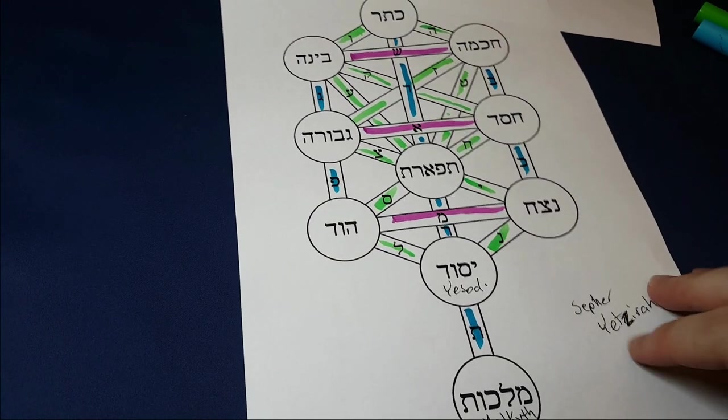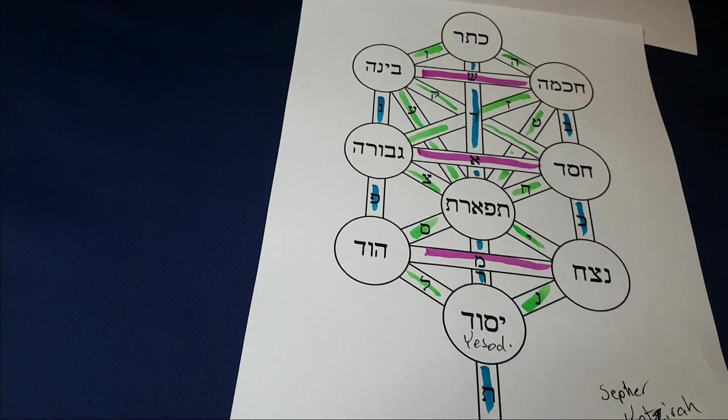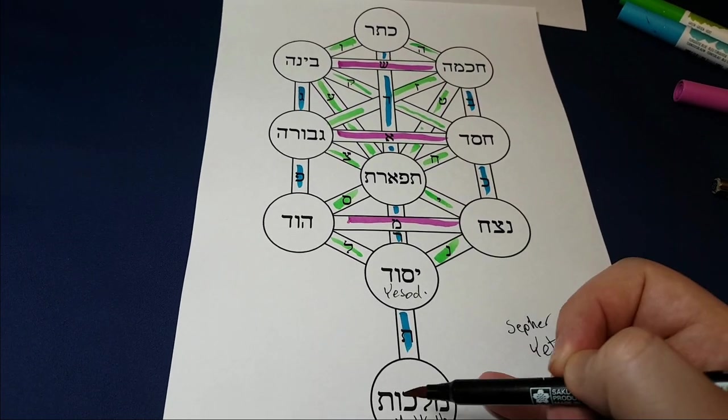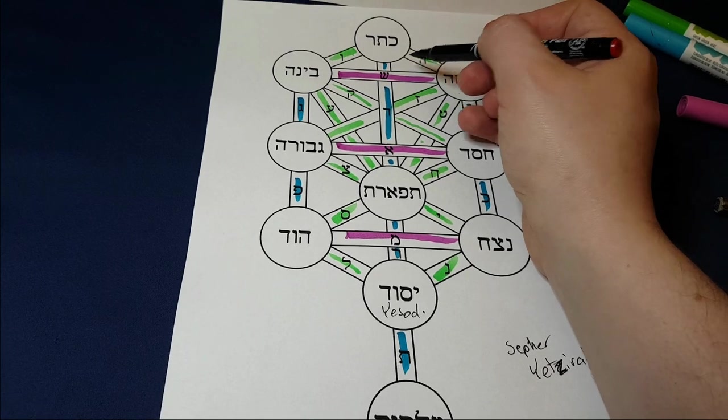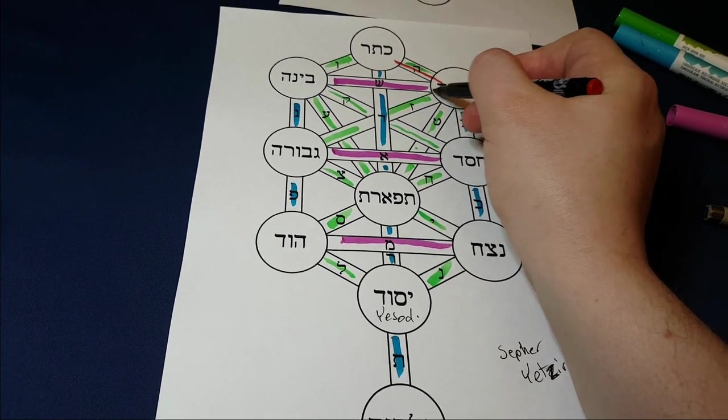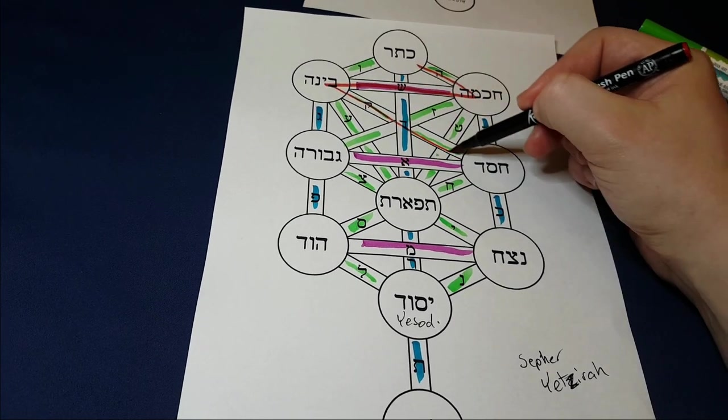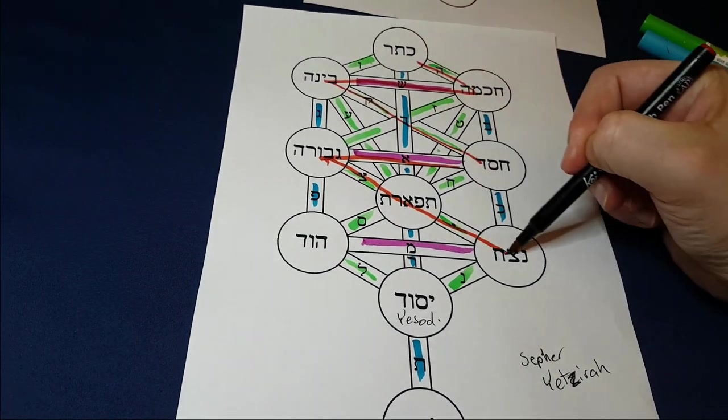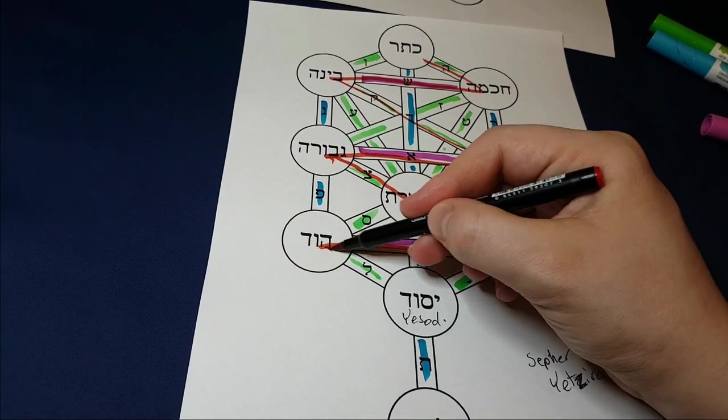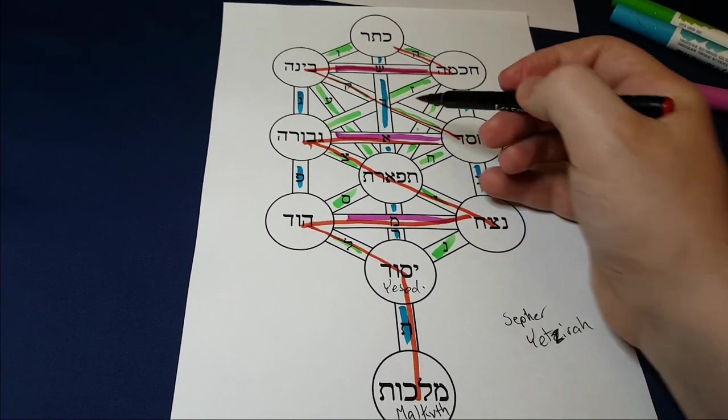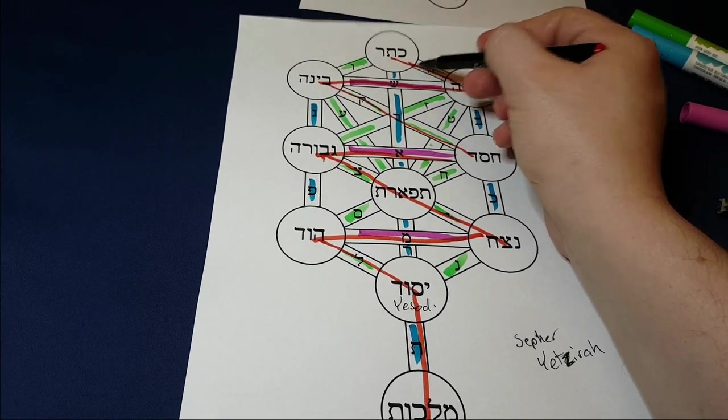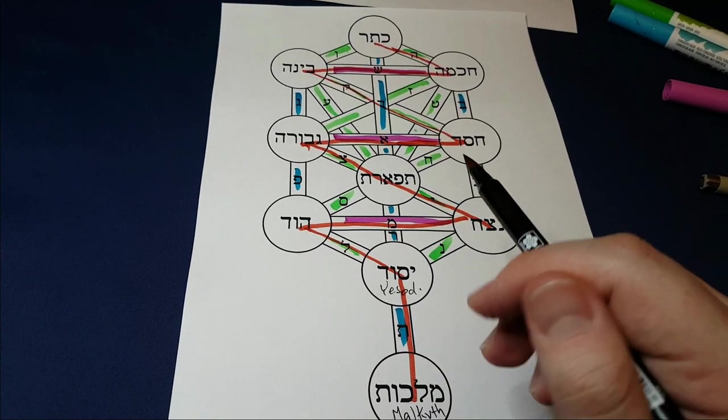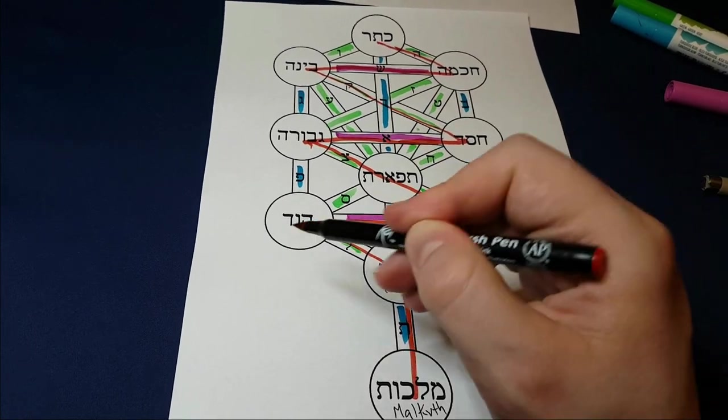Malkut down here and Yesod. Okay, I also really like the fact that the path which even Hermeticists show as a typical path from Kether to Malkut, or from Malkut to Kether, goes something like this. There you go. It looks a little bit like a lightning bolt. In fact, some people call it the lightning path. And there are paths that fit that all the way.